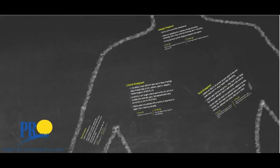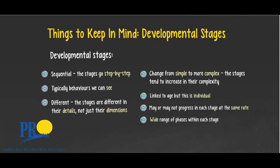Things to keep in mind as a leader working with middle childhood participants: development is sequential — the stages go step by step and relate to observable changes in behavior. The stages are qualitatively different, changing from simple to more complex. They may be linked to ages, but that link is just an approximation, as development is highly individual although it follows the same sequence. Children may progress in each domain at different rates, and there's a wide range of phases within each stage. Understanding development is critical — the behaviors that are developmentally appropriate for this age group may not be ones we like, but your job is to understand each child and use this information to channel behaviors positively.